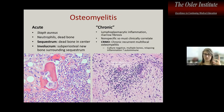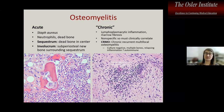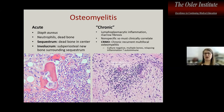Osteomyelitis in its acute form can be differentiated by actual acute inflammation with neutrophils. However, chronic inflammation in bone can occur adjacent to tumor, secondary to radiation, or as true chronic osteomyelitis with or without infectious organisms.